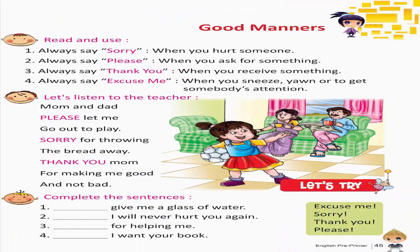Good manners — Read and use. Always say sorry when you hurt someone. Always say please when you ask for something. Always say thank you when you receive something. Always say excuse me when you sneeze, yawn, or to get somebody's attention. Let's listen to the teacher: Mom and dad, please let me go out to play. Sorry for throwing the bread away. Thank you, mom, for making me good and not bad. Complete the sentences. Let's try: Excuse me, Sorry, Thank you, Please.